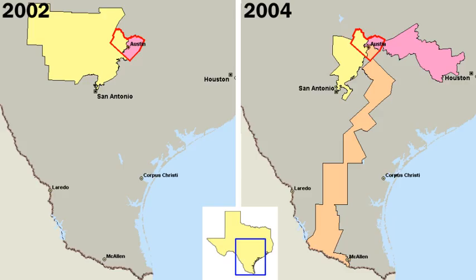Like the federal government, state governments have three branches — executive, legislative, and judicial. The chief executive of a state is its popularly elected governor, who typically holds office for a four-year term, although in some states the term is two years. Except for Nebraska, which has a unicameral legislature, all states have a bicameral legislature, with the upper house usually called the Senate and the lower house called the House of Representatives, the House of Delegates, Assembly or something similar.